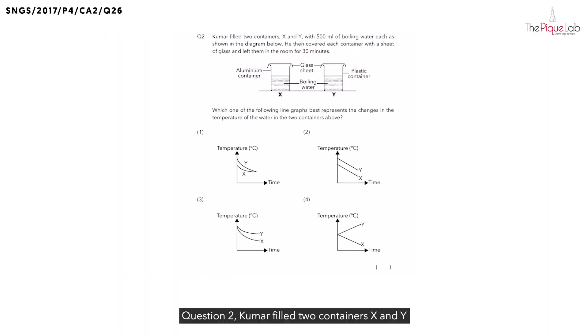Question 2. Kumar filled two containers X and Y with 500 ml of boiling water each, as shown in the diagram below. He then covered each container with a sheet of glass and left them in the room for 30 minutes.